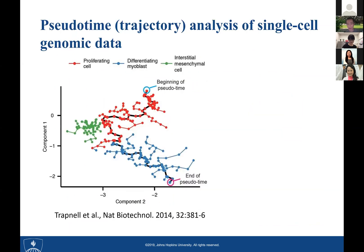With all this exciting development in technologies, analyzing single-cell genomic data is non-trivial. One common analysis I'm going to talk about today is pseudo-time analysis, also known as trajectory analysis. This type of analysis is particularly useful for analyzing cells that represent different stages in a continuous biological process — for example, a cell population consisting of cells at different developmental stages.